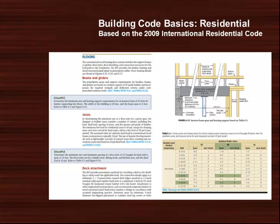The book includes many examples for correctly applying the minimum requirements of the code. As shown in this slide, examples for sizing beams and other framing members use highlighted table excerpts and color illustrations to walk the reader through the steps to reach a solution.